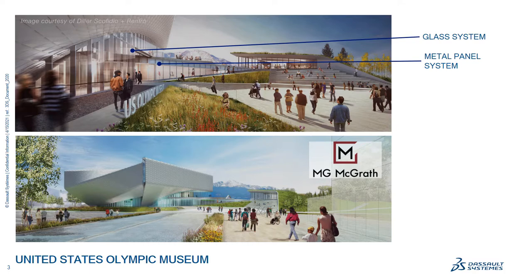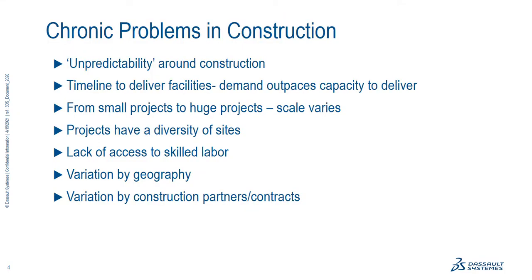I'm going to be talking specifically about customer examples of what's going on in the field today. The reason these are important is that even with automated techniques, there are some major chronic problems in construction. Although the automation helps in design, the construction process has an inherent unpredictability because of the supply chain, the amount of labor on site, the characteristics of different sites, and how problems that aren't caught early enough can compound and delay projects. This unpredictability is a risk that has been very difficult to address, even with advanced 3D modeling systems.